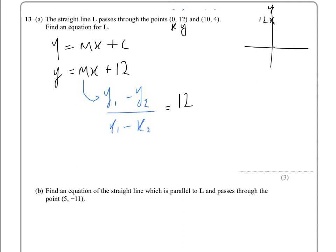So what you end up with is 12 which is the y1 minus 4 over 0 minus 10 and that gives us 8 over minus 10 and that gives us minus 0.8. Therefore the equation of that line, L equals minus 0.8x plus 12.